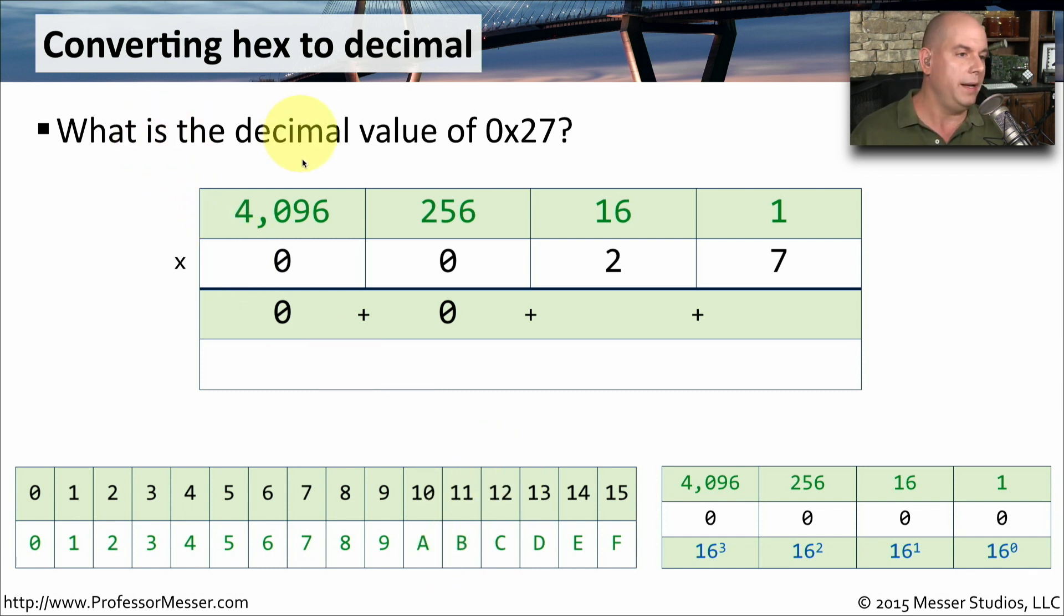So our first question is, what is the decimal value of 0x27? We're going to put in our conversion chart right at the top with the 4096, 256, 16, and 1. And in this case, we have two places, a 2 and a 7, since we're converting 0x27, so we'll just bring down the 2 and the 7 in the farthest right sections.